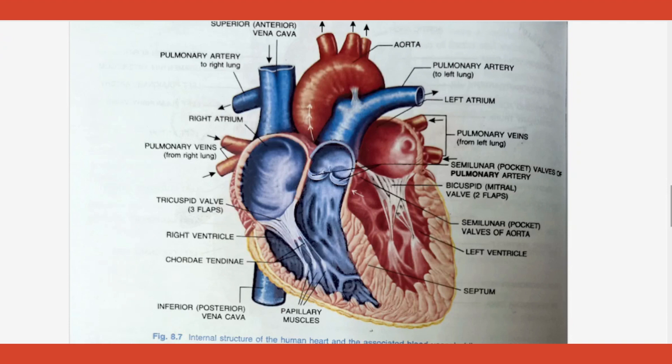From the ventricle, blood goes into the arteries — on the left hand side into the aorta, and on the right hand side into the pulmonary artery. Both are arteries. Just at the junction of the ventricle and these arteries, there is another valve called the semilunar valve.